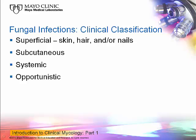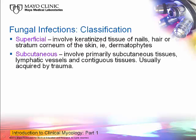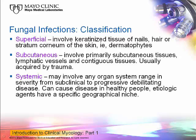We try to classify fungal infections into groupings, though it is somewhat artificial. We divide them into superficial, subcutaneous, systemic, and opportunistic infections. Superficial infections involve the keratinized tissue — the hair, skin, and nails — with dermatophytes as good examples. Subcutaneous infections involve the skin and contiguous subcutaneous tissues, including lymphatic vessels. Most subcutaneous infections are acquired by trauma to a site, usually an extremity.